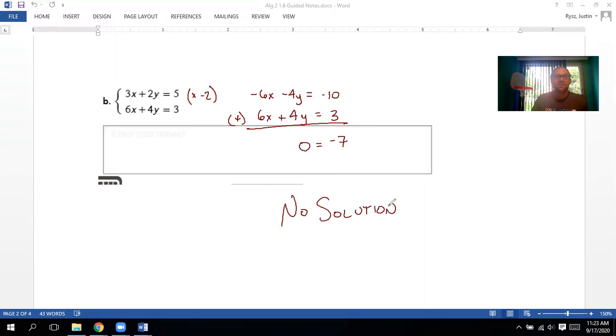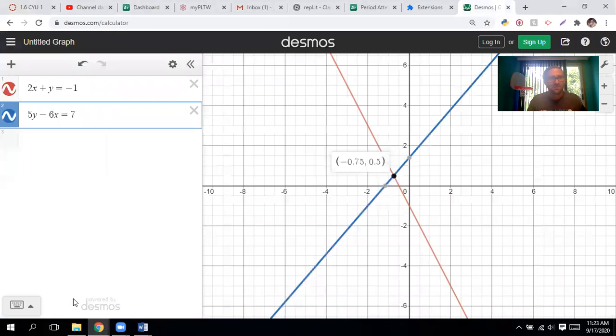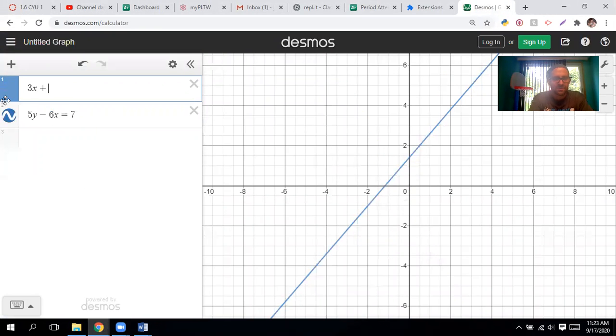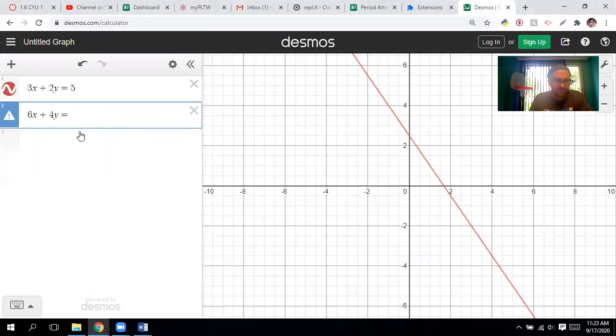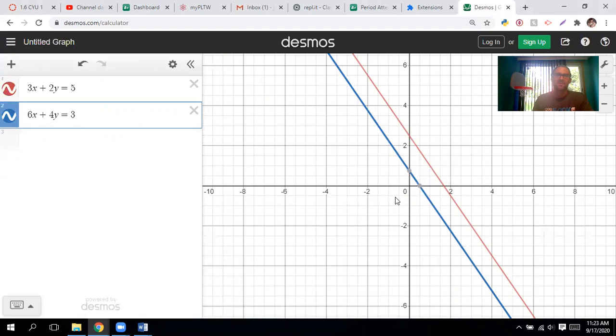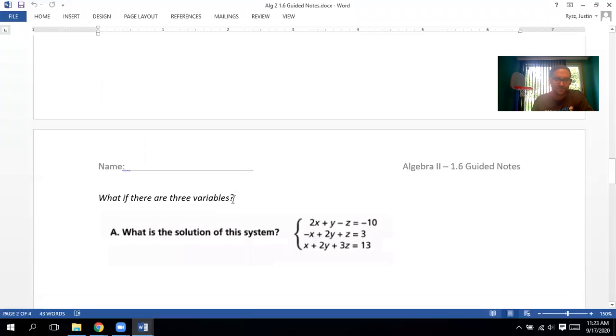So there's no way we can have an x. And if we just verify this on Desmos, hopefully you guys can hear my son practicing his drawing. Three x plus two y equals five. And the other one was six x plus four y equals three. If we look, those are two parallel lines, they will never cross. So that does happen. Just got to watch out for that.